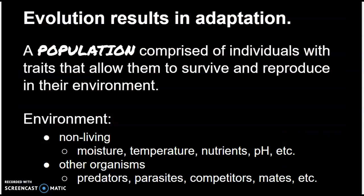A couple of big ideas: evolution results in adaptation, and adaptation isn't just talking about individual characteristics of an organism, but also the idea that the entire population has traits that allow them to survive and reproduce in their environment. The environment could be things like climate, temperature, kinds of nutrients available, or it could also be other organisms — predators, other species they're competing with, parasites and diseases, and so forth.